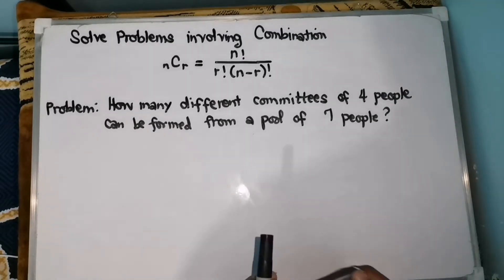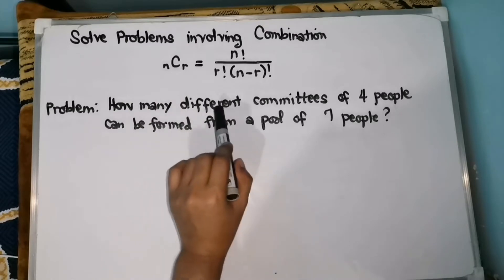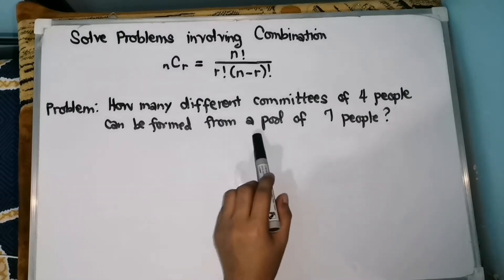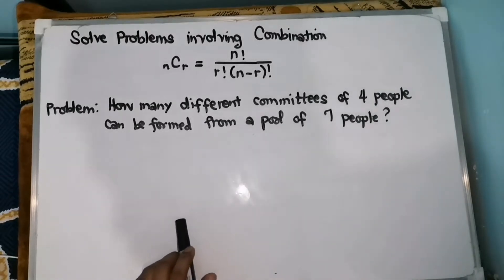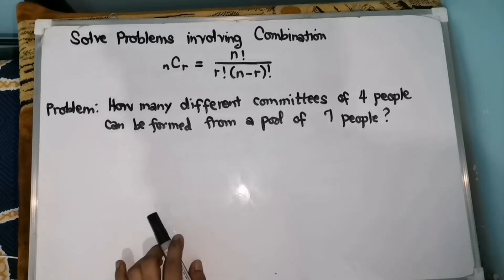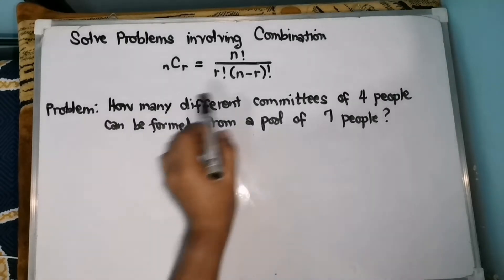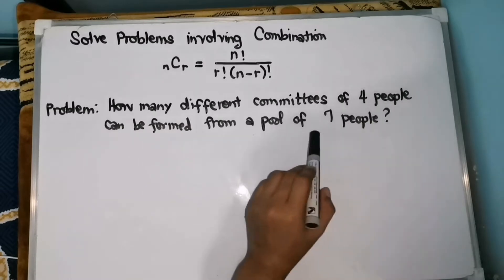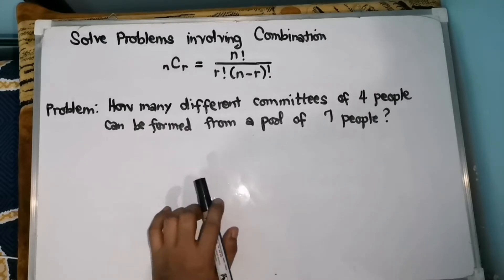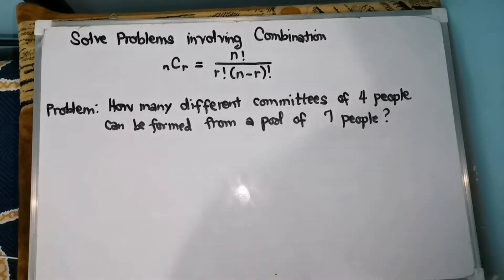Let's start with the first problem: How many different committees of 4 people can be formed from a pool of 7 people? The order of being selected for a committee is not significant. Thus, the problem asks for the combinations of 7 objects taken 4 at a time. We are selecting 4 people out of 7 people to form committees, so the arrangement is not important. This problem is under combination.